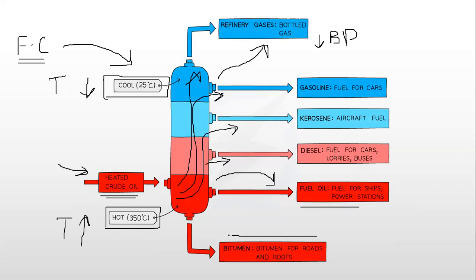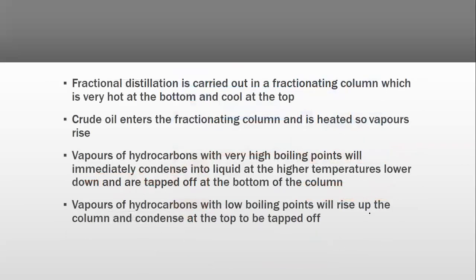That substance is known as bitumen, and you should also know the uses of each. Gasoline is used as fuel for cars, kerosene as aircraft fuel, diesel as fuel for cars, lorries and buses, fuel oil for ships and power stations, and bitumen is used for making roads and roofs.